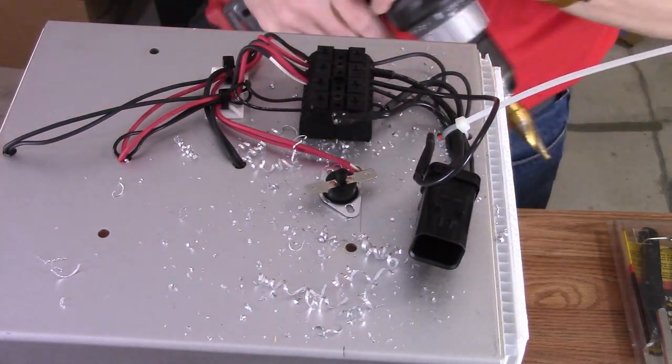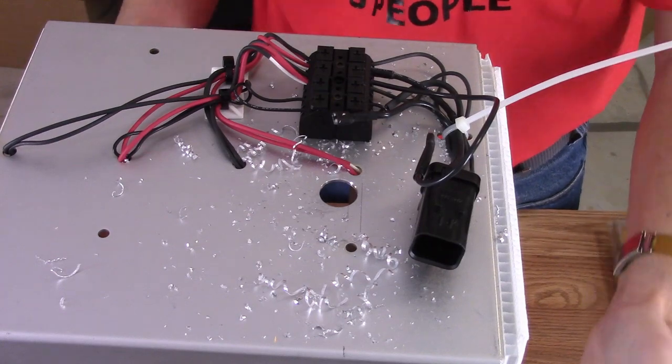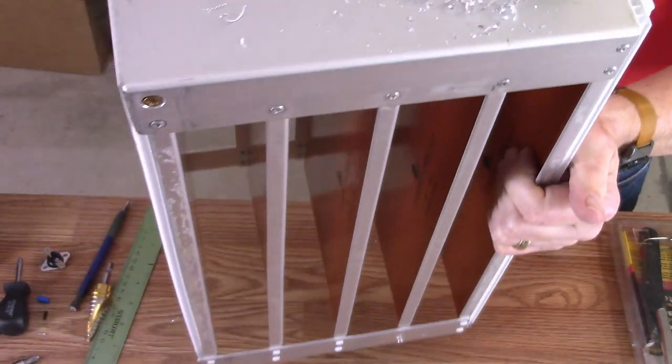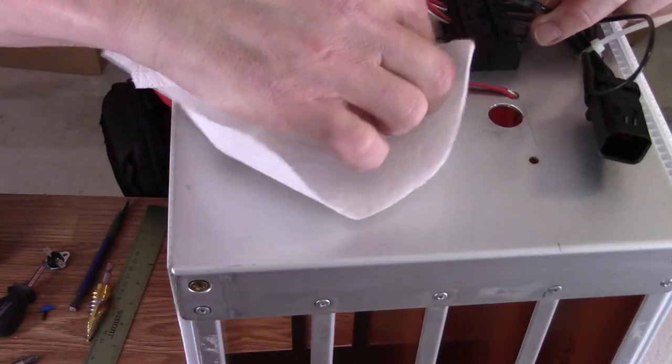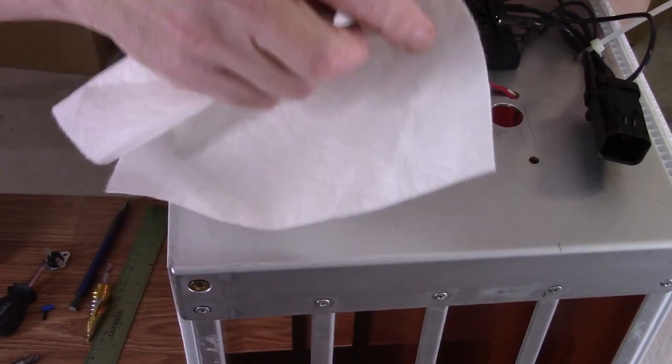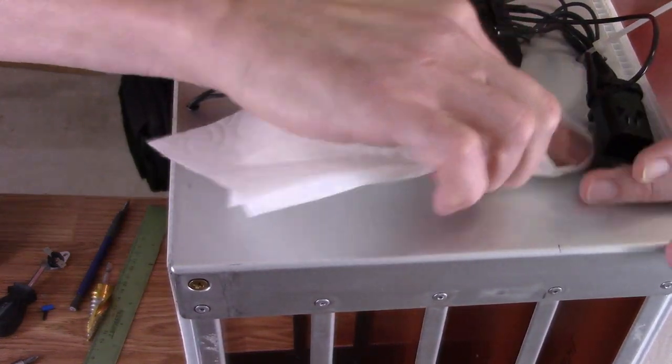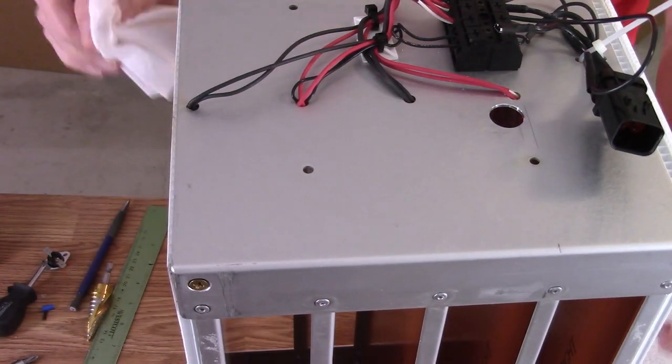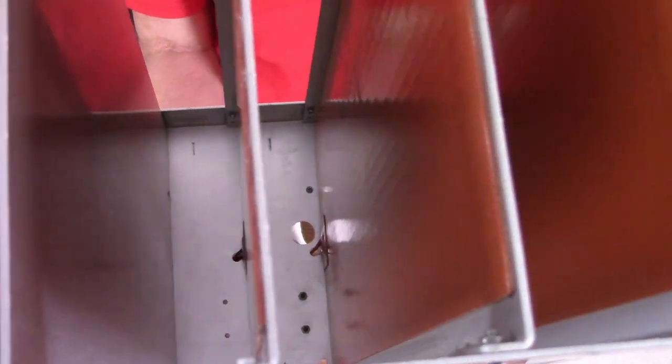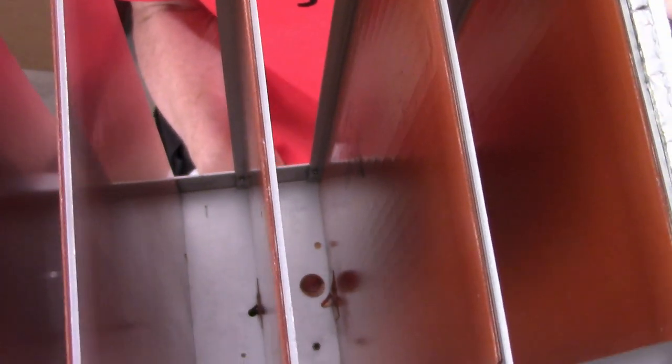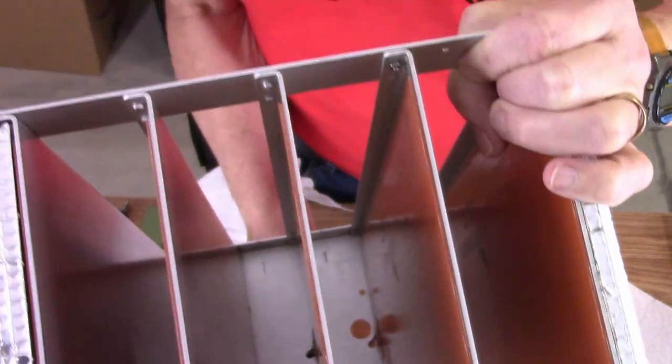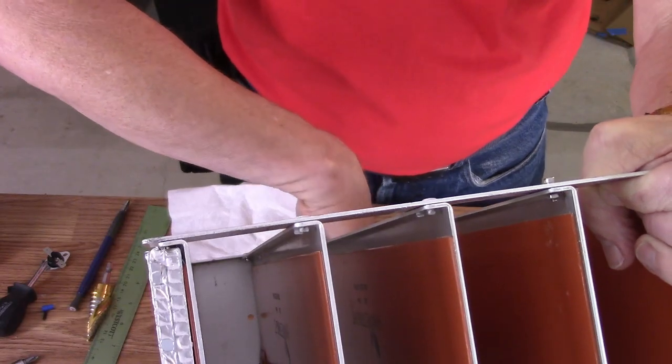All right, there we go. Clean up all these shavings first, make sure that none of them get to where they don't want to be. Make sure we get all the metal filings cleaned out of there, because that would be a bad thing to get in any of the electrical bits. Now we have a new hole there. That's where that's going.